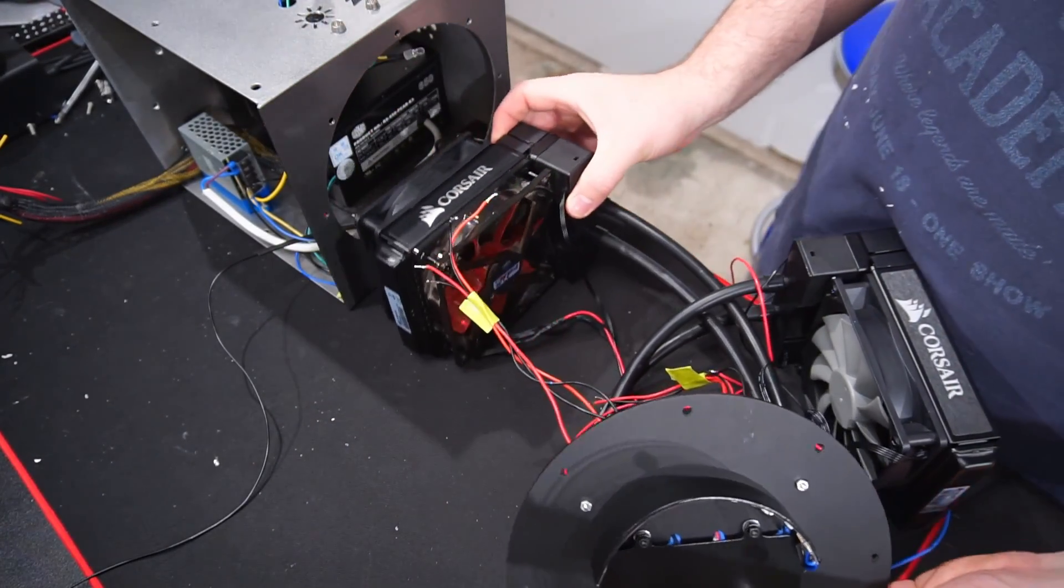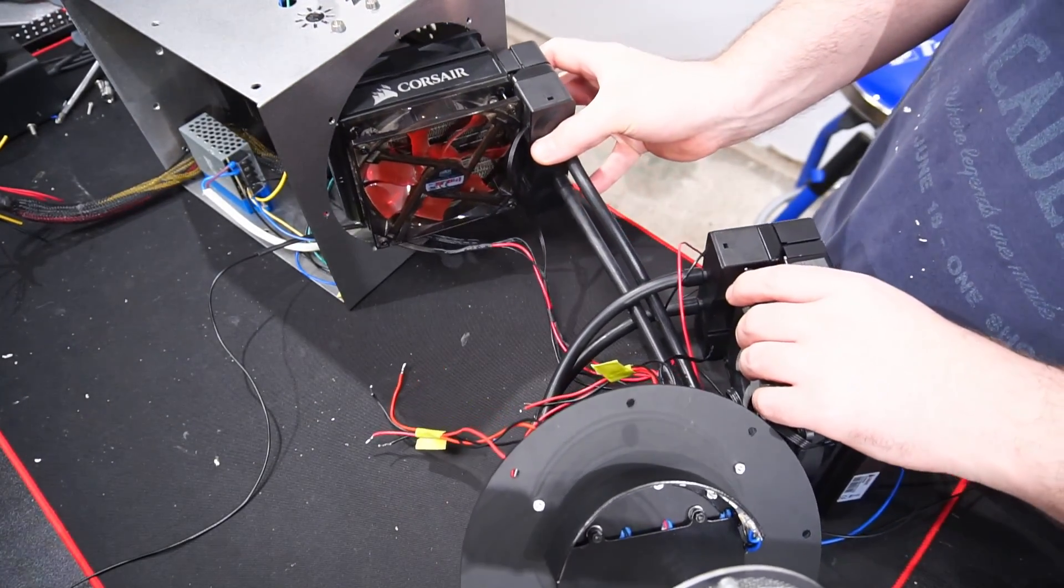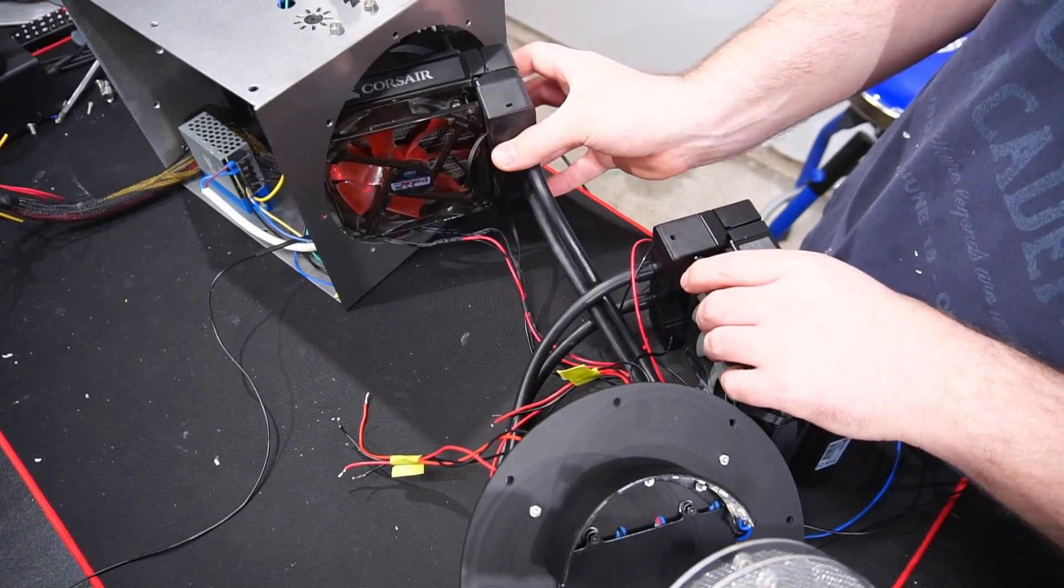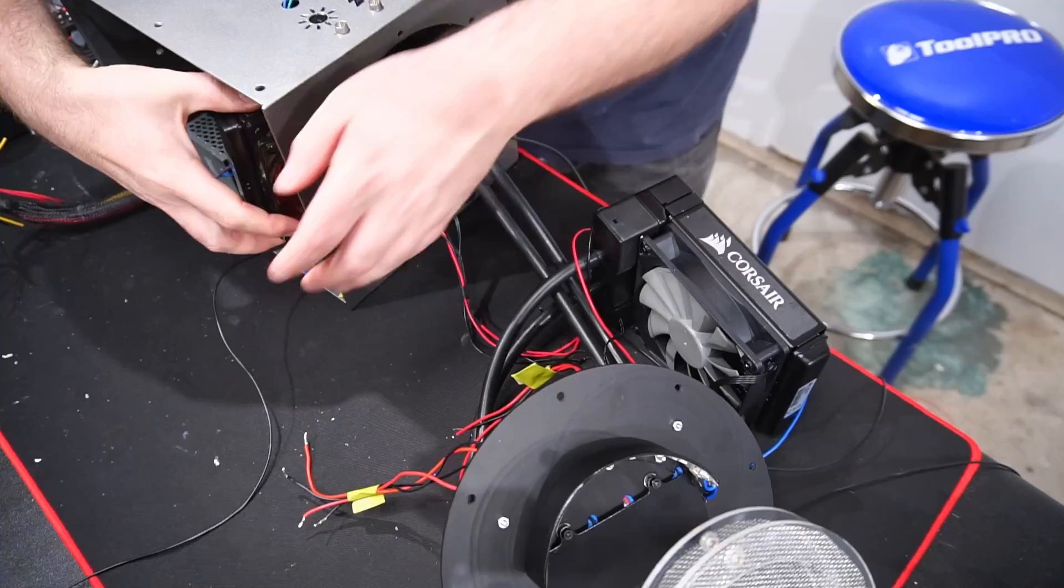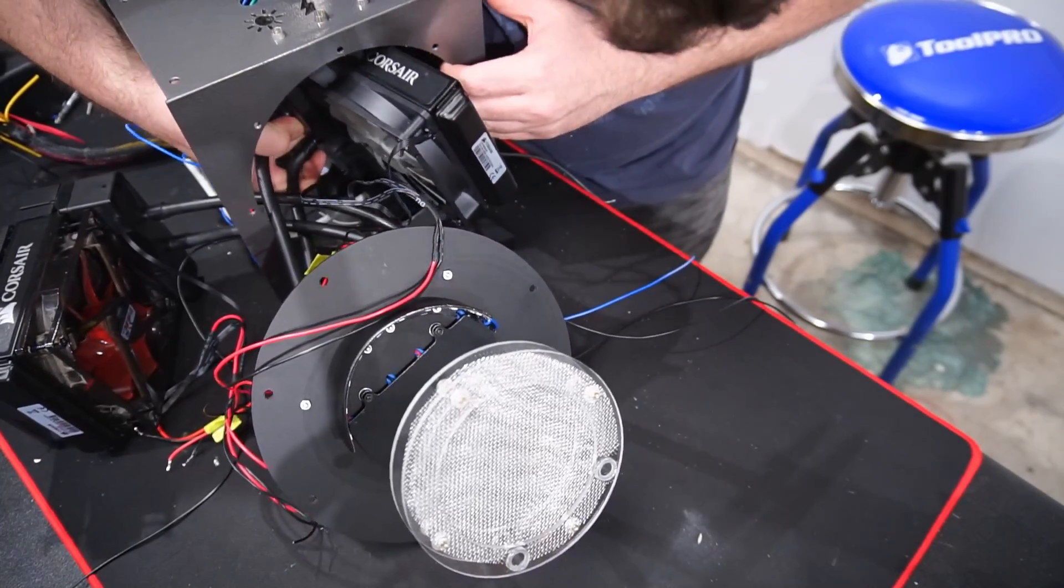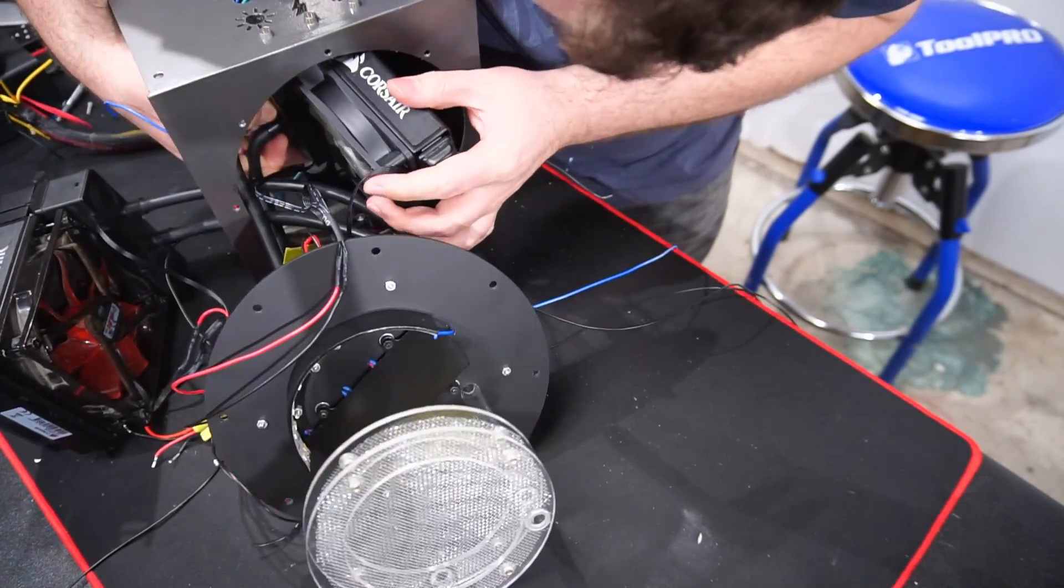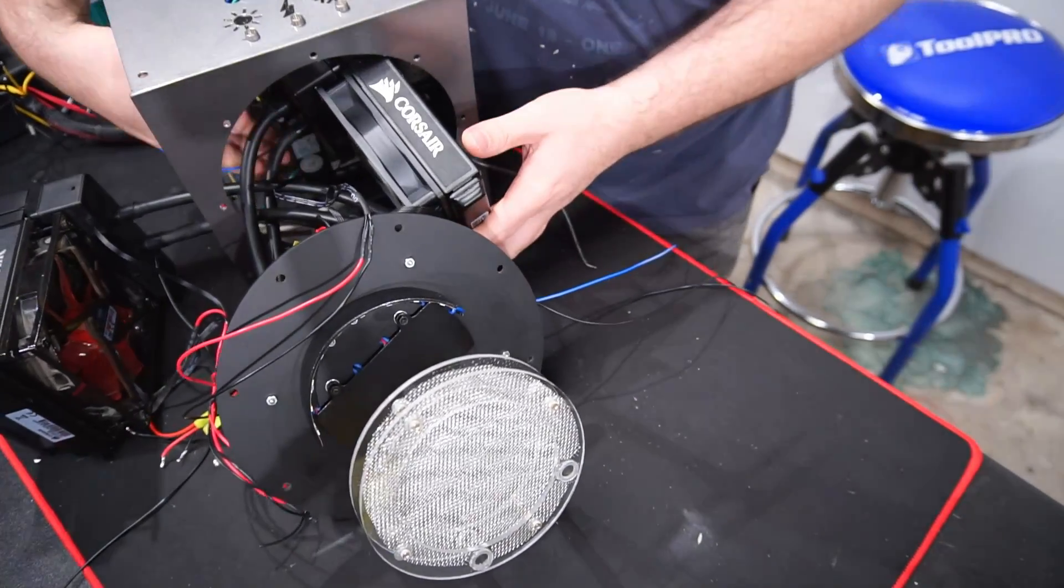Now came the trickier feat of squeezing everything into the enclosure. Originally this enclosure was designed for only one stack of Peltiers and only one cooler. But that failed to get me down to the temps required for a cloud chamber. So here I am attempting to cram twice the amount of hardware into the same enclosure.